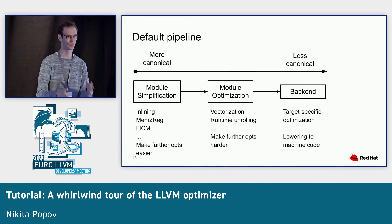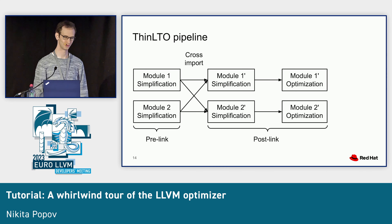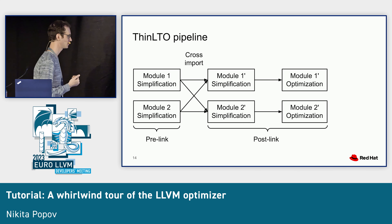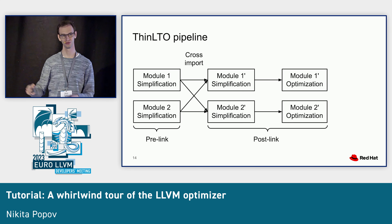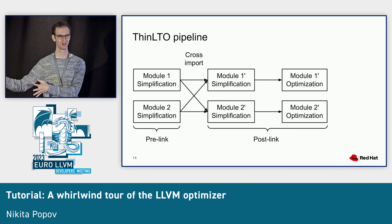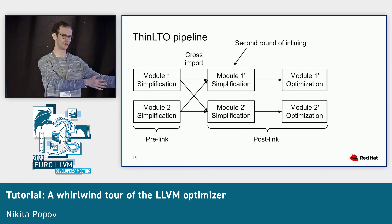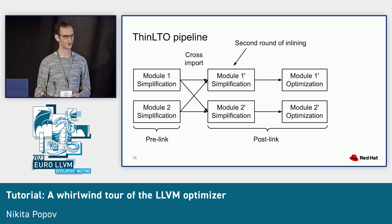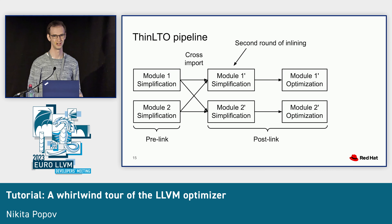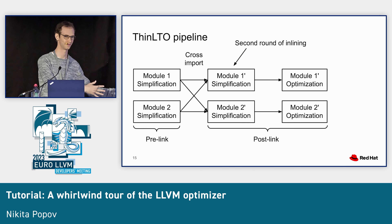This split between simplification and optimization mostly comes in with LTO. What we want to do in LTO pipelines is: before linking, only run simplification; after linking, run both simplification and optimization. The reason is that we have a second round of inlining after linking. For example, if we vectorize a loop before linking with an unknown number of iterations, and after linking we discover the number of iterations is one — vectorizing a single-iteration loop is likely non-profitable. So we don't want to do those kinds of optimizations before we have the wider context.